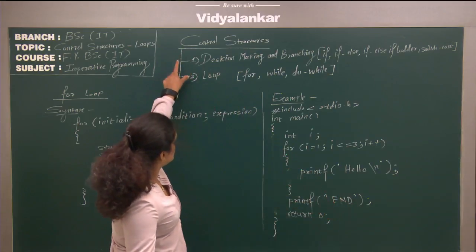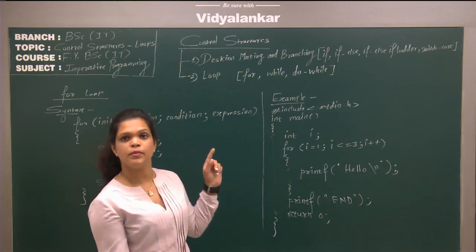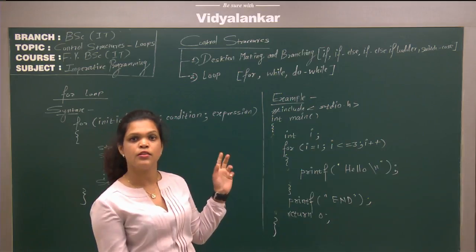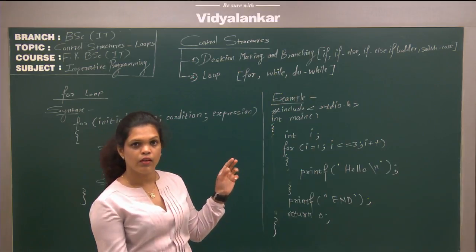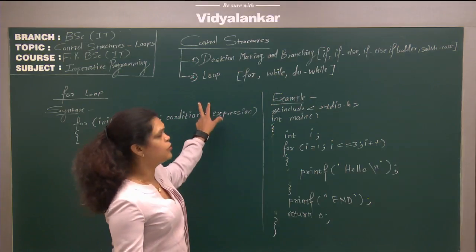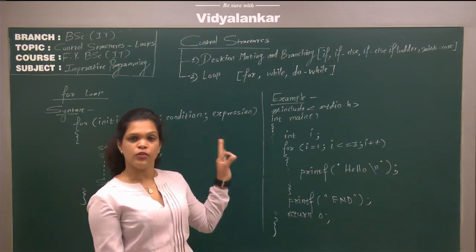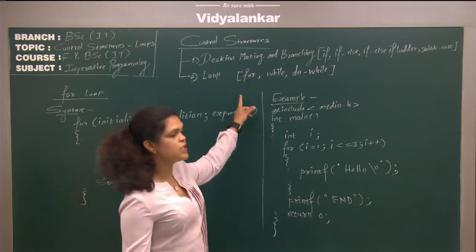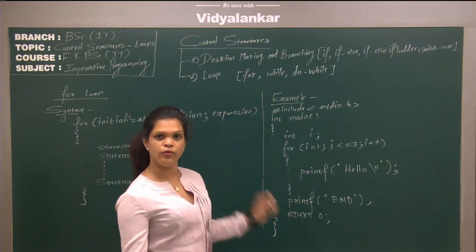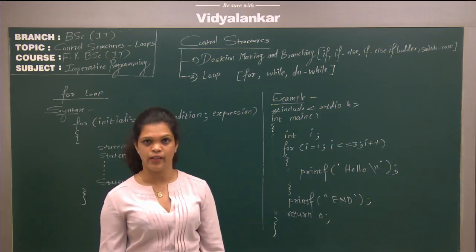In control structures, there are two types. The first is decision making and branching, and the second is loop. We are going to discuss loop. There are three loops: the first is for loop, second is while loop, and third is do-while loop.